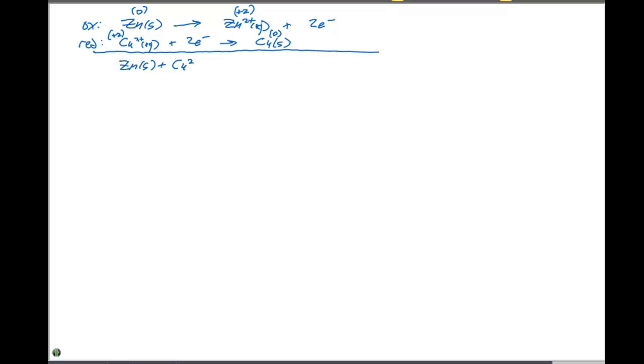Then we have two electrons on the reactant side, and two electrons on the product side. So, they're going to cancel each other out. And the products then are going to be zinc two plus in aqueous solution, plus copper solid. So, this is our overall chemical reaction for the spontaneous process that's occurring here.